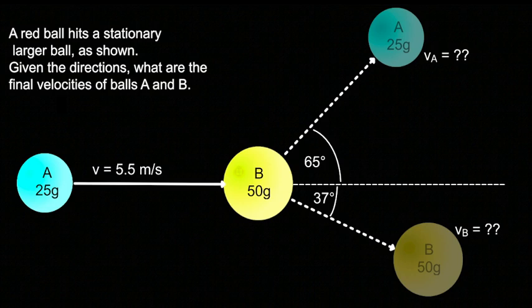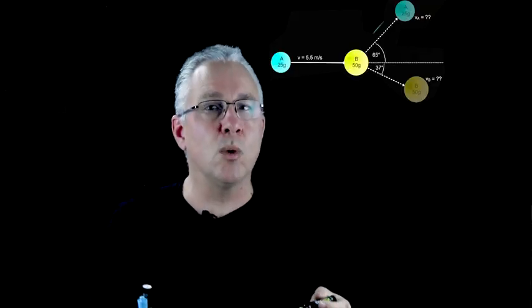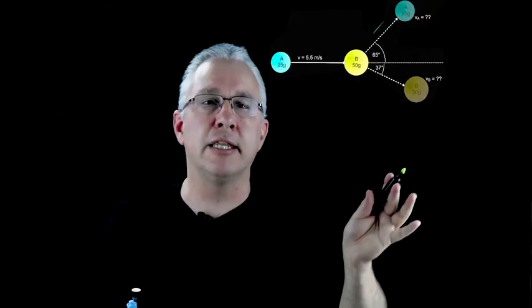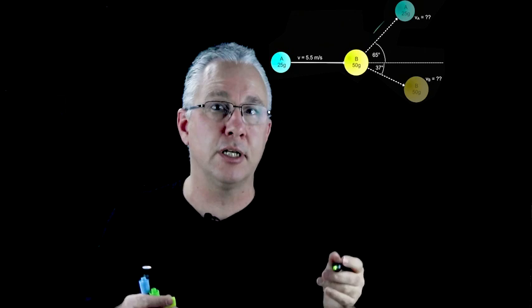I have ball A which is a lighter mass and ball B which is a heavier mass. And then we're asked, well what is the velocity of A and the velocity of B after the collision?